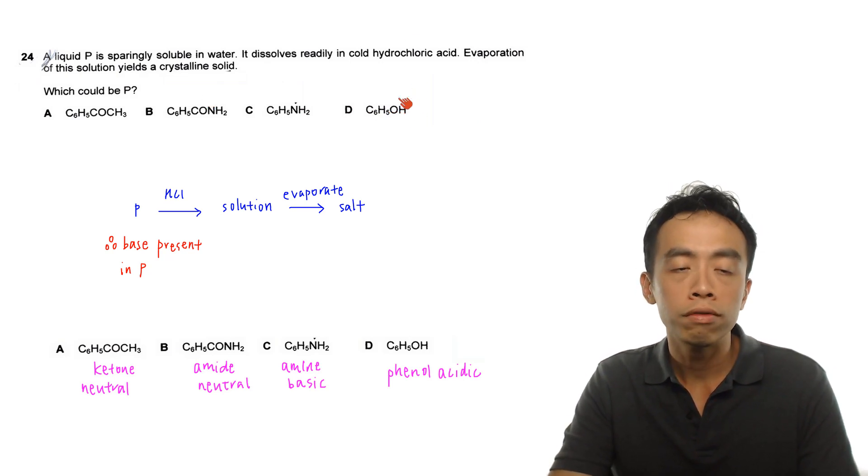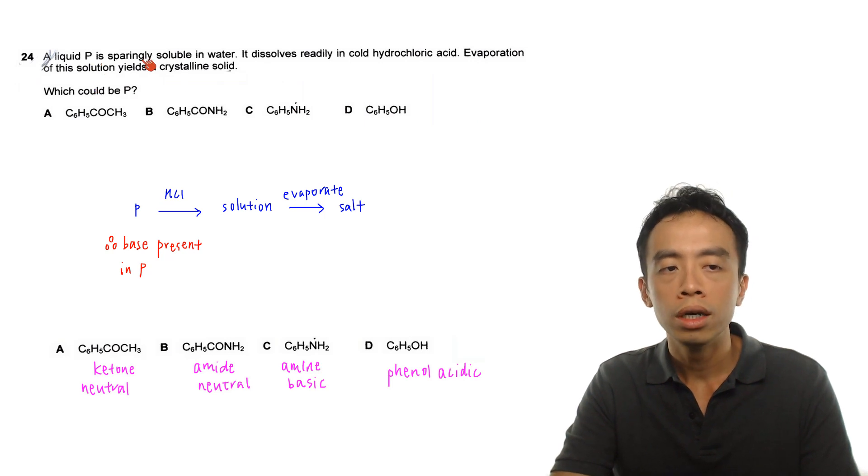So this question is pretty straightforward because if I have a liquid P that is sparingly soluble in water, which is not surprising for most organic compounds, the solubility in water is pretty bad, not very soluble, then it dissolves readily in cold hydrochloric acid.